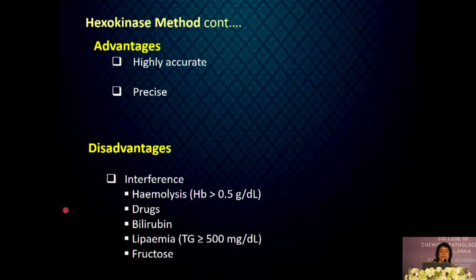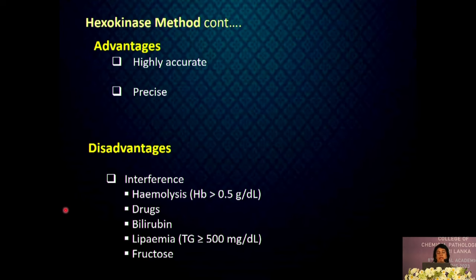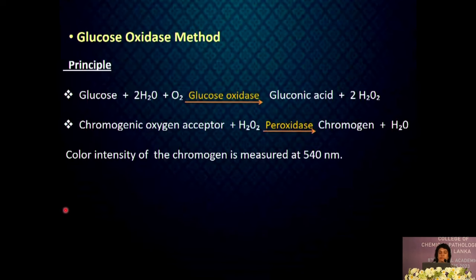The hexokinase method is highly accurate and precise. Among its disadvantages, it can be interfered by many substances. Hemolyzed samples are unacceptable because phosphate esters and enzymes released from red cells will interfere with the assay. Other sources of interference are drugs, bilirubin, lipemia and fructose. In a fasting sample, fructose concentration is minimal, so fructose interference is not a problem.